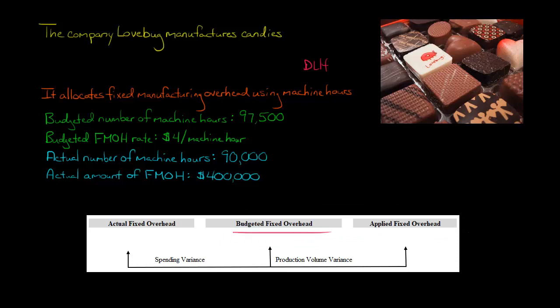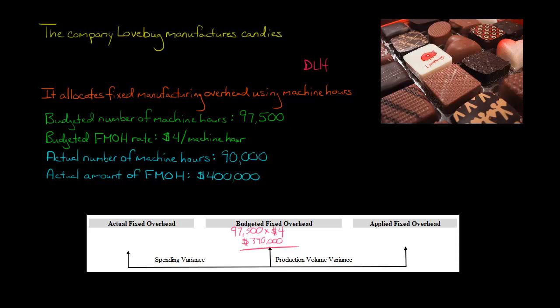Let's start with the budgeted fixed overhead. We budgeted 97,500 machine hours, and we budgeted the rate to be $4 per machine hour. So if we multiply $4 by 97,500, we get $390,000. That's the amount of fixed overhead that was budgeted: $390,000.